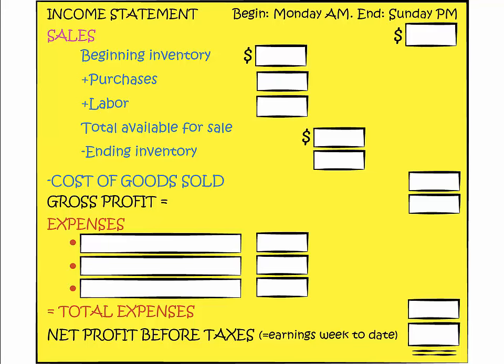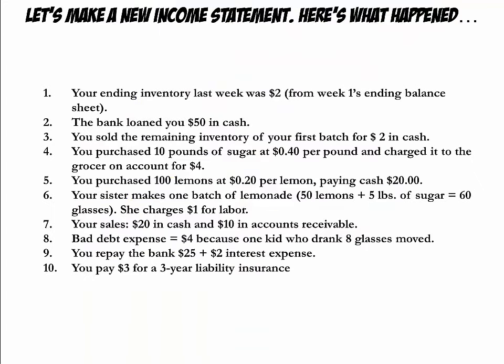Let's try to build an income statement for Week 2. You can print an empty income statement template from Google Drive. I strongly recommend you try to build it yourself before moving on, so you can discover where you struggle. You can use the next slide, which has an overview of everything that happened in Week 2, to try to fill in the blanks of the income statement template. Let's go over these items one by one and see whether they are relevant to the income statement and how they affect it.